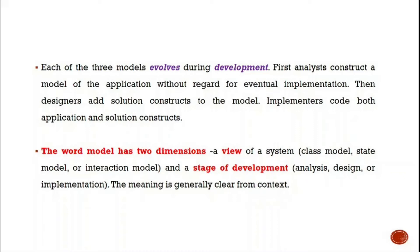The overall model has two dimensions: the view of a system and the stages of development. Before developing any system, these two dimensions are considered. The view of a system consists of the three types of models — the class model, the state model, and the interaction model — while the stages of development are analysis, design, and implementation.